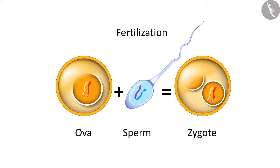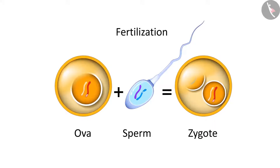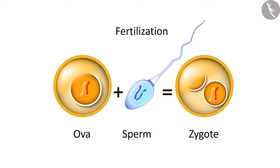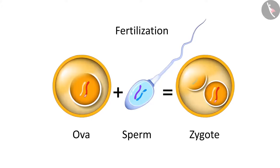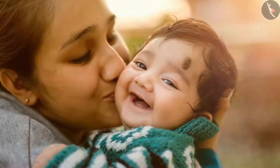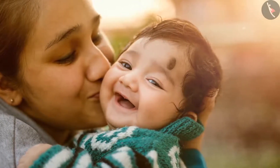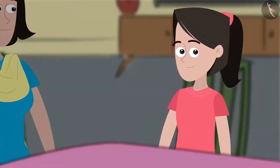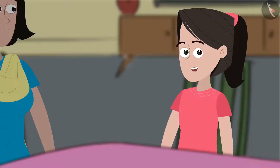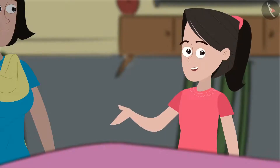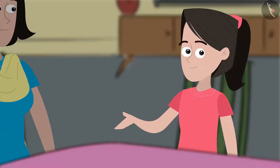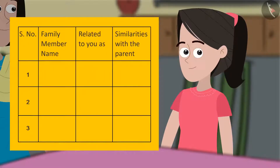The zygote that is formed inherits some traits of both mother and father. Oh, that is why you at times see similarities between parents and their kids. Absolutely. Friends, do you understand now why you may have heard someone tell you that you look like your father or your mother, or you do a certain thing like one of your parents? Let us do an activity here. Observe the members of your family and make a list of similarities between them and their respective parents.